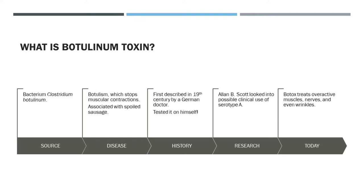Even back then, Dr. Kerner proposed its therapeutic use, but that didn't come to fruition until about 1973, when a man by the name of Alan B. Scott researched serotype A as a possible treatment.